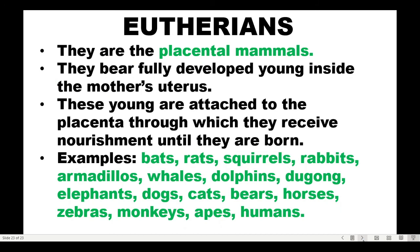Finally, eutherians are placental mammals — we humans belong here because we have a placenta. The young are fully developed inside the mother's uterus, usually about nine months for humans. The young are attached to the placenta through which they receive nourishment until they are born. Examples include bats, rats, squirrels, rabbits, armadillos, whales, dolphins, dugongs, elephants, dogs, cats, bears, horses, zebras, monkeys, apes, and humans. This ends the discussion about Kingdom Animalia vertebrates.